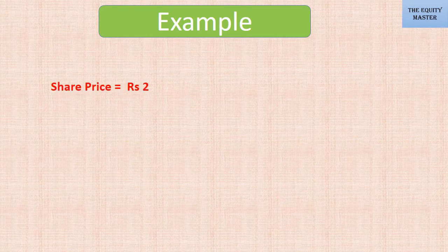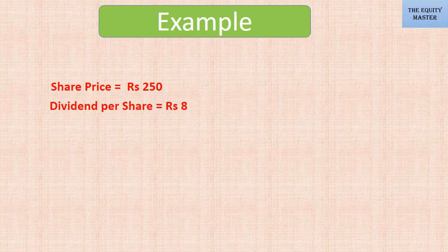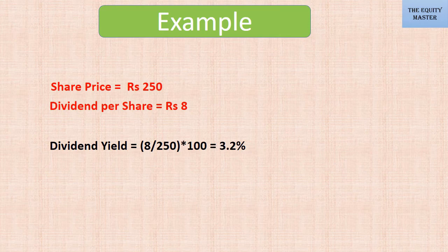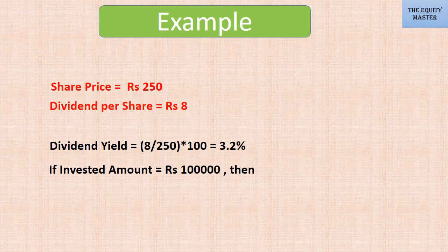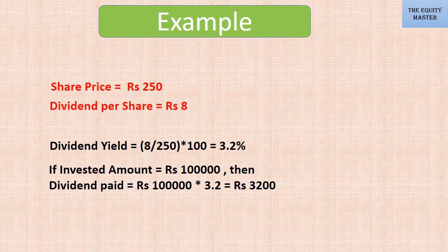Let's consider one example. Given that share price is 250 rupees and dividend per share is 8 rupees, dividend yield equals 8 divided by 250 into 100, which is equal to 3.2%. If you have invested 1,00,000 rupees, then dividend paid will be 3.2% of 1,00,000, that is 3,200 rupees.